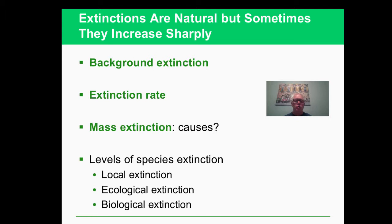Local extinction is where the species is no longer in an area it was before. Ecological extinction is where it can no longer keep its role in its niche - it can no longer keep its role in the ecosystem. And biological extinction is when they are gone completely.